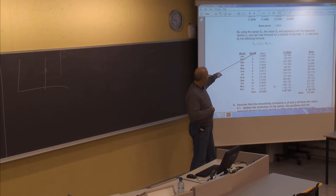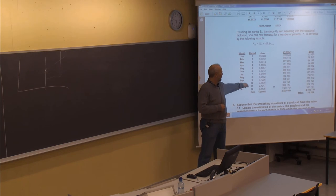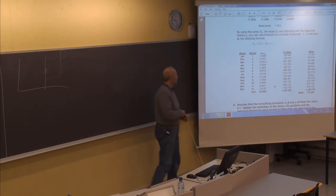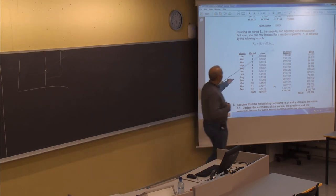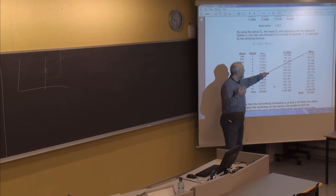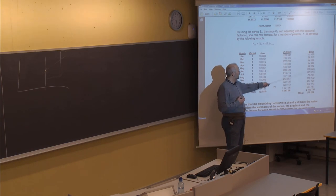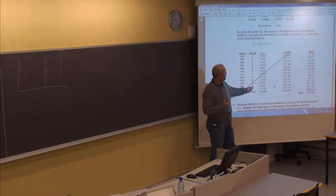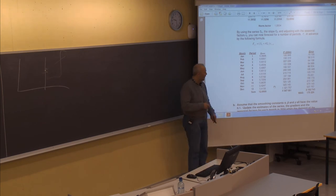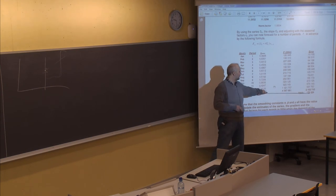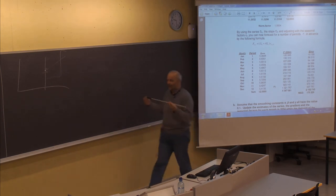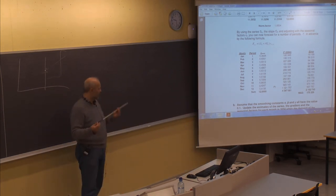Using the seasonal factors, we can find the forecast shown here. We can also compare with the actual demand for 2004, which is now available in the problem description, and see the deviation between the forecast and the actual demand. We get a mean average deviation of 175,229, which can be used when comparing to other ways of forecasting.